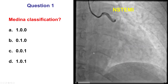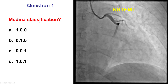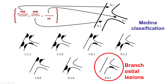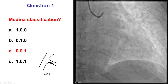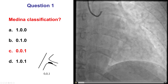This is a basic application of the Medina classification, which has three numbers. The first number is the main proximal vessel, the second number is the distal main vessel, and the third number is the side branch. In this particular case, we have no disease in the main vessel proximal or distal, but there is disease in the ostium of the side branch. This is a Medina 0-0-1 bifurcation — a branch osteal lesion.